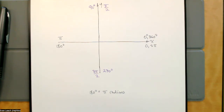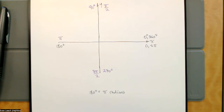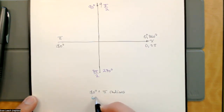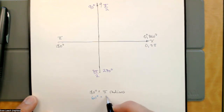Once again, we're going to start with 180 equals pi radians, and now we're going to get our way to 60-degree reference angles. In the previous one, we did our 90s, our quadrantal angles, and our 45-degree reference angles all the way around. Now we're going to get our 60-degree reference angles. If we take 180 and divide by 3, that'll be 60 degrees, and that'll be pi over 3 radians.